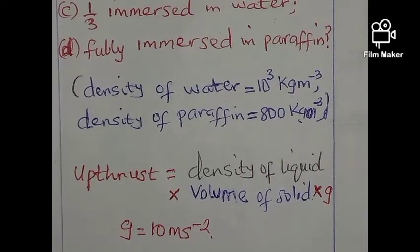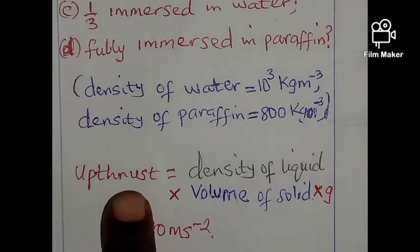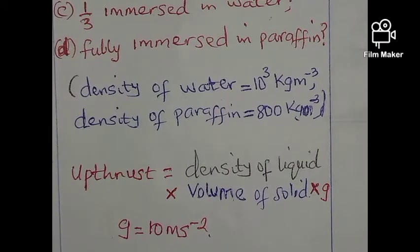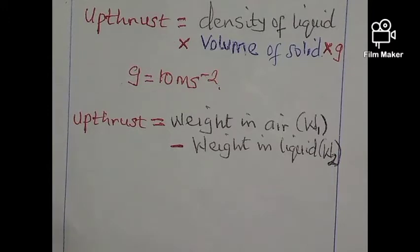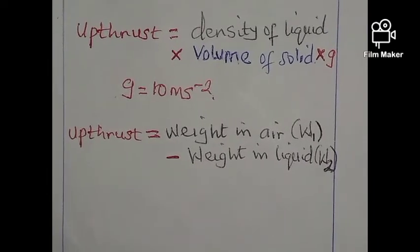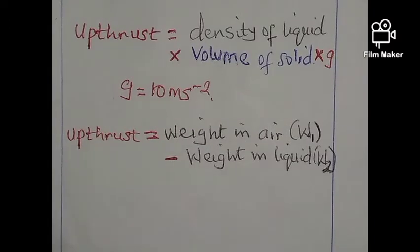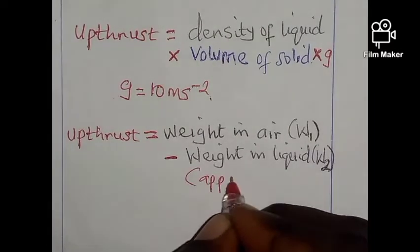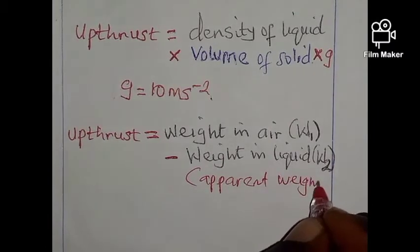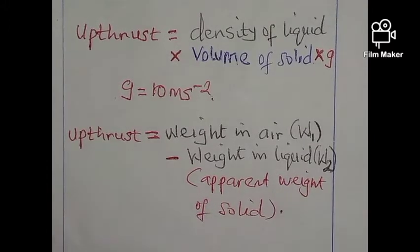We also have that upthrust equals weight in air (W1) minus weight in liquid (W2). The weight in liquid is also referred to as the apparent weight of the solid. So we have two formulas for upthrust: upthrust = ρ × V × g, and upthrust = W1 − W2, where W2 is the apparent weight of the solid in the liquid.